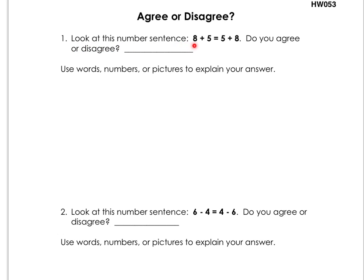8 plus 5 equals 5 plus 8. Do you agree or disagree? So they want you to write down if you agree or disagree, if this is a true statement or not. Okay, is this always true, or is this only sometimes true? If it's not always true, then you should write disagree. If you believe it's always true, then you should write agree.